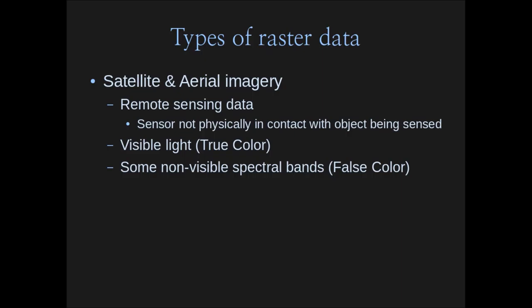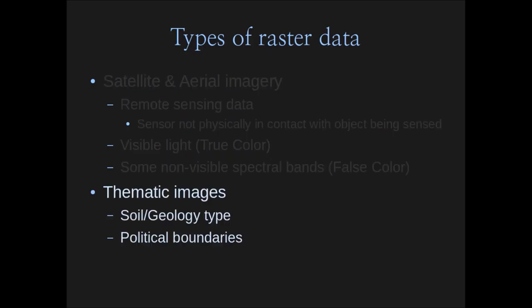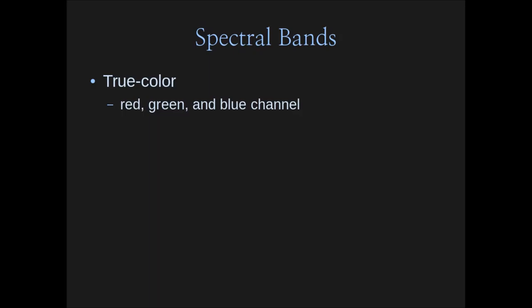Remote sensing can be in visible light — called true color imagery, though that's a little misleading — or in non-visible spectral bands, often called false color imagery. We can also have thematic images, which are not photography at all, but things like geology type of a geographic area, or political boundaries. Let's talk about the common spectral bands used in this imagery.